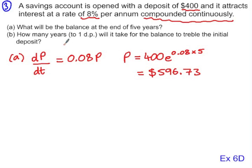In the second example, we want to know how long it's going to take for the balance to treble. So in other words, how long will it take for this $400 to become $1,200? We need to solve this equation and solve for t. So $1,200 is equal to $400, e to the 0.08t.